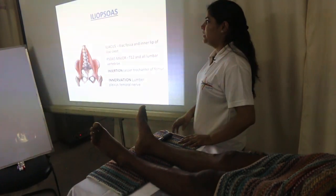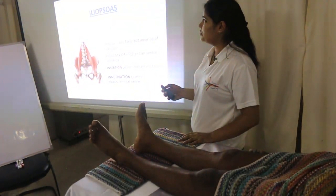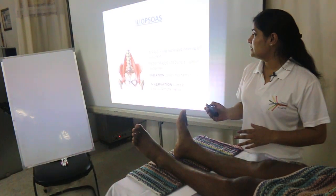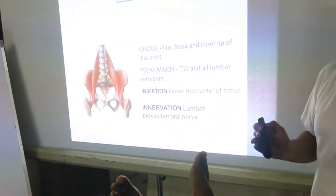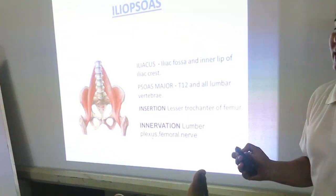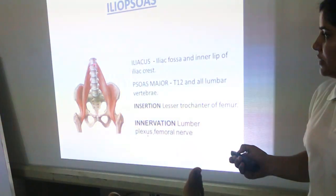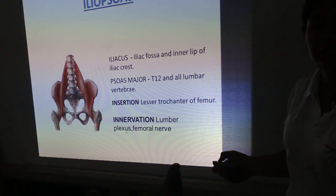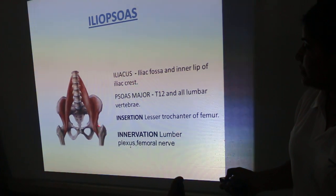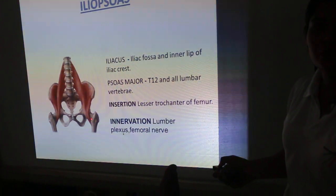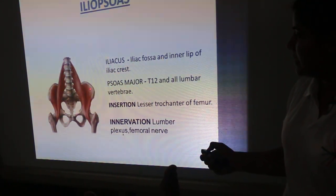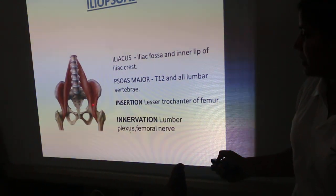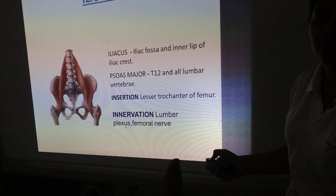Here we come with the iliopsoas — two muscles forming iliopsoas: one is iliacus and the second one is psoas major. Iliacus comes from the iliac fossa, but psoas major comes from the lumbar vertebra, and both muscles insert over the lesser trochanter. This is the area where they make iliopsoas — here is the iliacus part, here is the psoas part, and here they become one and form iliopsoas.